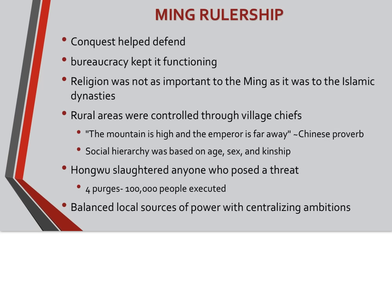We now move to Ming rulership. Conquest helped defend the bureaucracy and kept it functioning. Religion was not as important to the Ming as it was to Islamic dynasties — an important comparison for AP World History. The rural areas were controlled through village chiefs, and a Chinese proverb of this time was 'the mountain is high and the emperor is far away.' Social hierarchy in local areas was based on age, sex, and kinship. However, Hongwu slaughtered anyone who posed a threat — there were four purges and over 100,000 people were executed. He balanced local sources of power with centralizing ambitions.